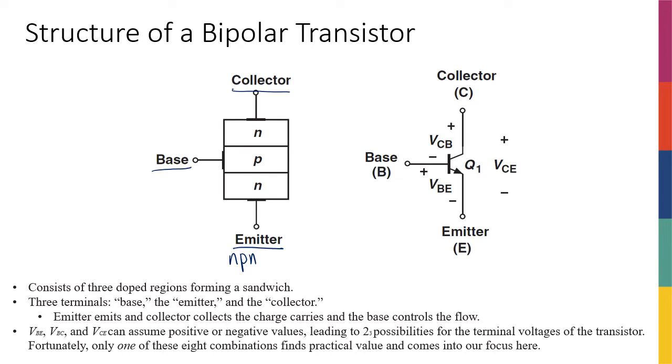Generally, the way things work is that the emitter emits and the collector collects the charge carriers, and the base terminal is the one that works like that valve. The base voltage is really controlling the flow of charge carriers from emitter to collector.